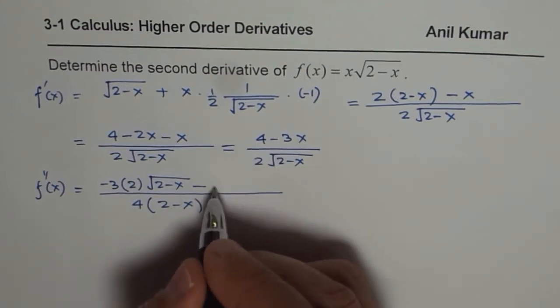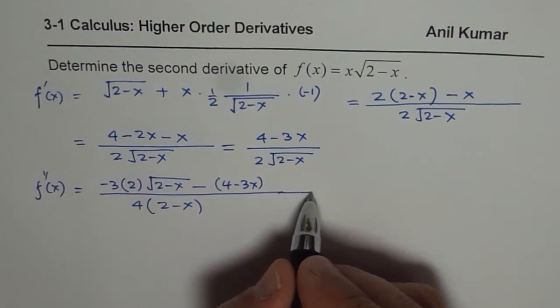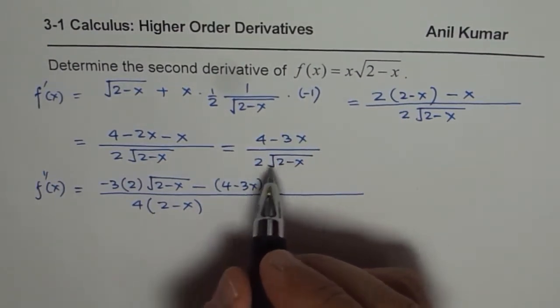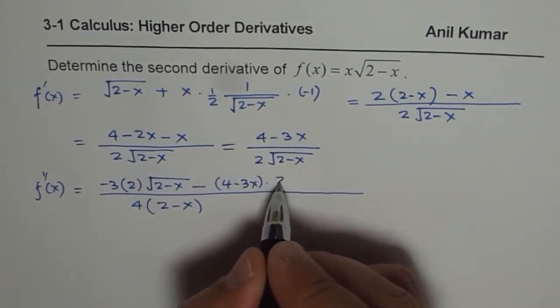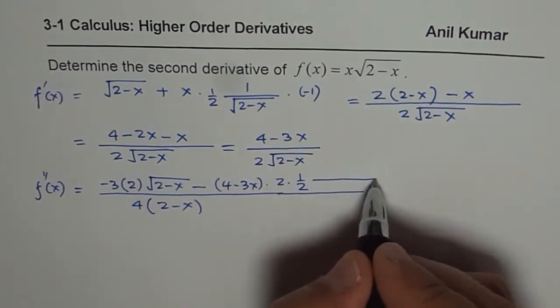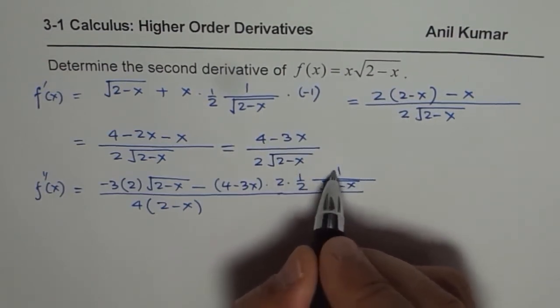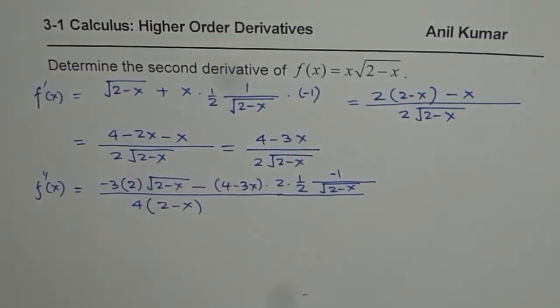Minus numerator which is 4 minus 3x times derivative of this function. So derivative of this function will be 2 times half of 1 over square root of 2 minus x, times derivative of inside which is minus 1.